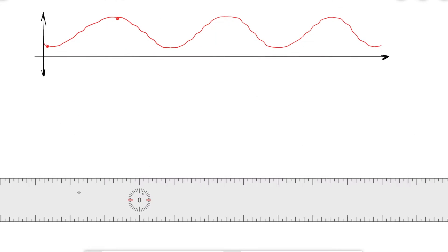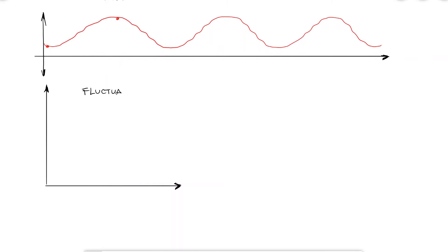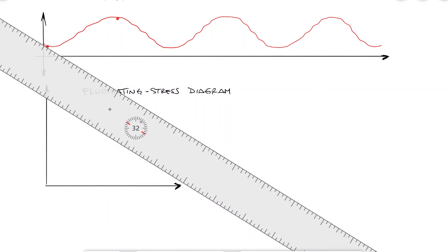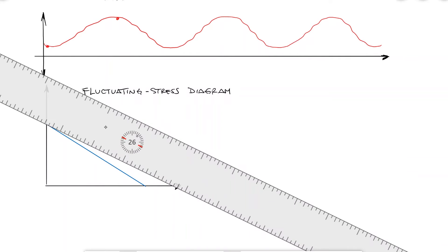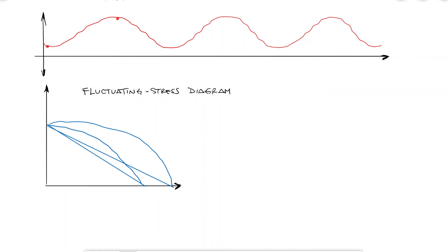If we recall the fatigue failure criteria curves on a fluctuating stress diagram, that is, the Goodman-Gerber-Morrow-ASME curves on a Cartesian plane with alternating stresses on the y-axis and mean stresses on the x-axis, we see that a stress state, sigma_a and sigma_m, will be safe if it's below the criterion's curve, and on the edge of failing if it's found exactly on top of the curve.